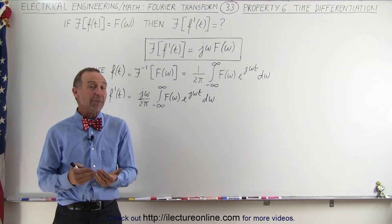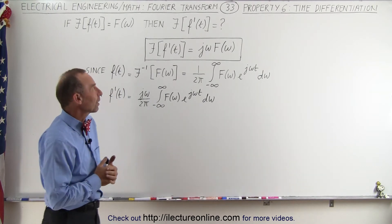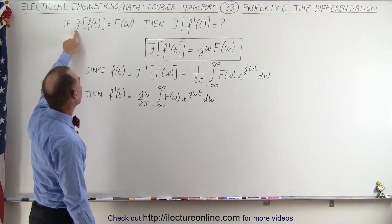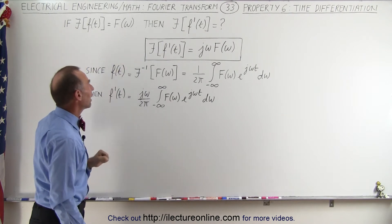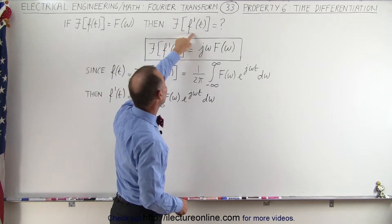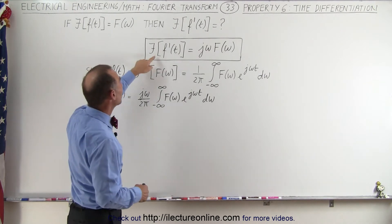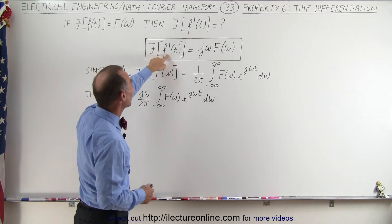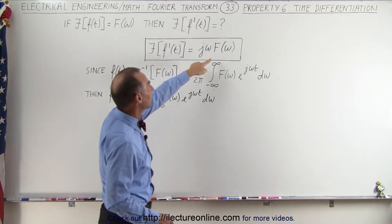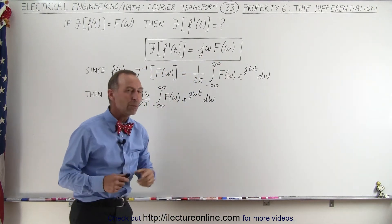Welcome to our lecture online. The next property we're going to look at is called the time differentiation property of Fourier transforms. In other words, if we have a function in the time domain and we want to take the Fourier transform of it, we get the function in the frequency domain. But if we want to take the Fourier transform of the time derivative of the original function, what do we get? We propose that the Fourier transform of the derivative with respect to time gives us the function in the frequency domain multiplied by j omega. So let's see why that is so.